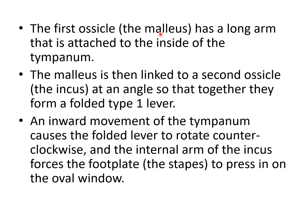As seen in the previous diagram, the malleus is the first ossicle and is attached to the tympanic membrane. Whenever the tympanic membrane moves, the malleus moves, and the malleus is linked with the second ossicle — the incus — at a particular angle. They always move together and form a type 1 lever. The attachment or joint between the malleus and incus is an example of a folded type 1 lever.